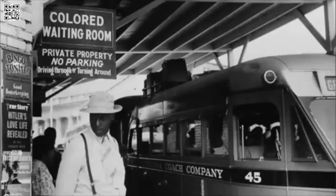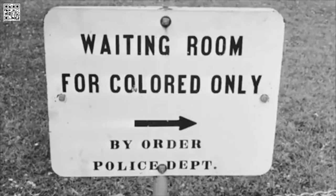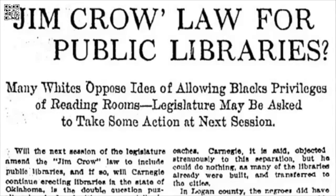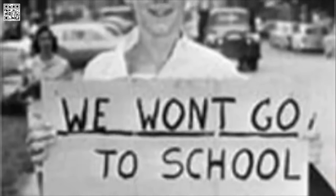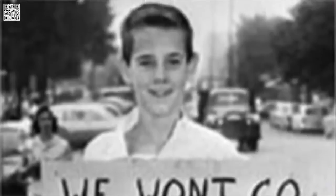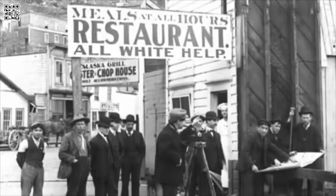In many Southern churches, people were taught that whites were the chosen people and that blacks were cursed. Here are some examples of Jim Crow laws: a black male and a white male could not shake hands because it implied that both were socially equal. Blacks and whites were not supposed to eat together, and if they did, whites were to be served first and some sort of partition was to be placed between them.